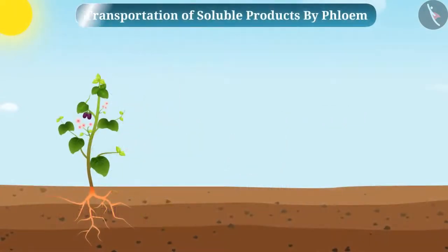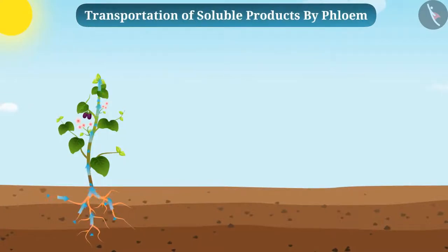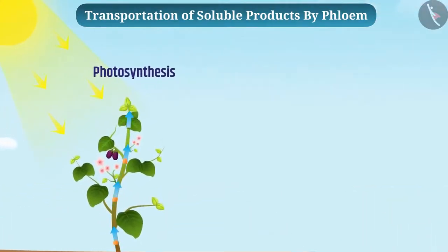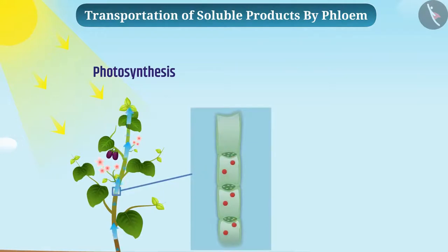Transportation of soluble products by phloem. In plants, transportation of water is important, but at the same time, transportation of soluble products of photosynthesis, amino acids and other substances is also important. The job is done by phloem. The transportation of soluble products of photosynthesis is called translocation.